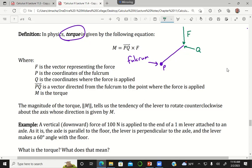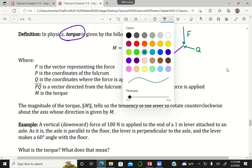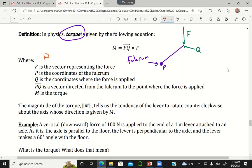PQ with a little line above it represents the vector in space that has its tail at point P and the tip of the vector at point Q. If I follow this formula, the vector PQ cross with my force vector gives me what we call torque.